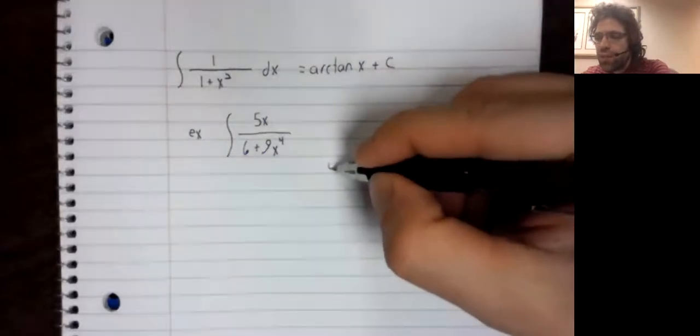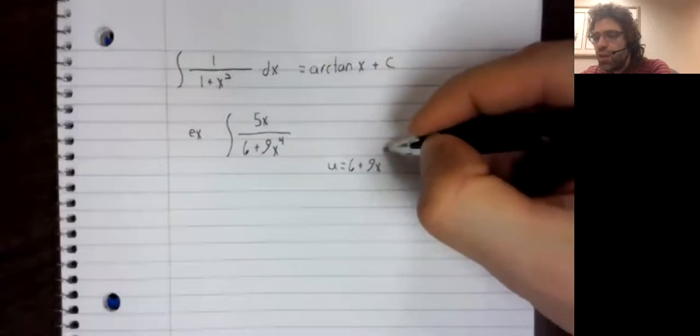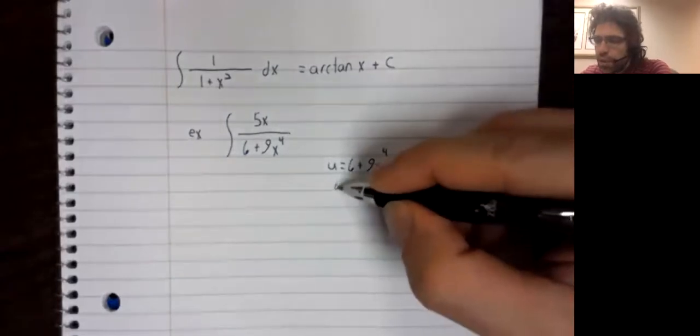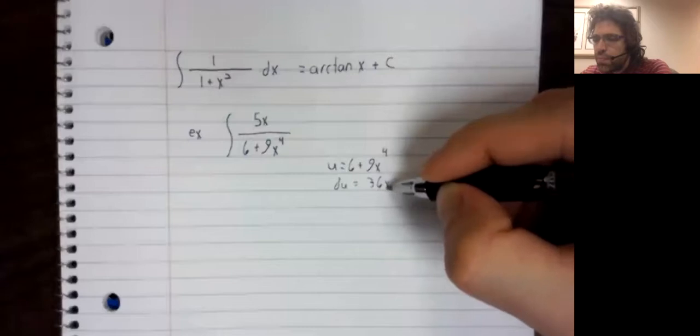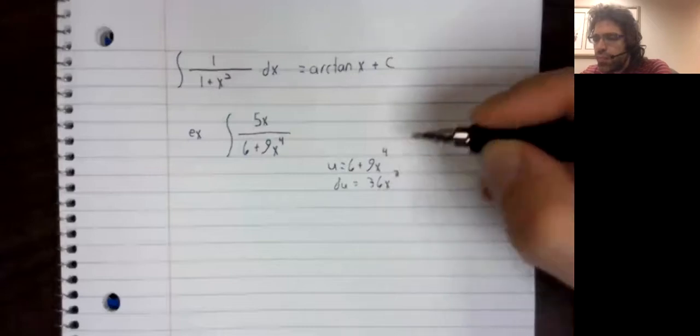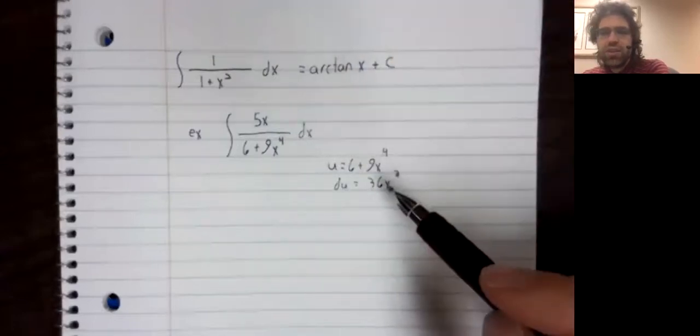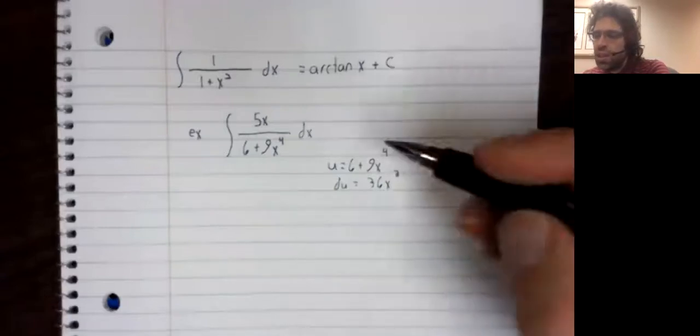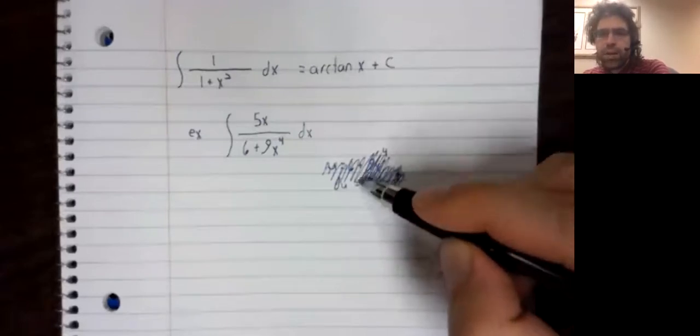Maybe you'll look at this, and the first thing you think of will be a u-substitution. You spend a little time on that. You see that you cannot turn this dx into du. You don't have the x cubed that you need. So you give up the effort.